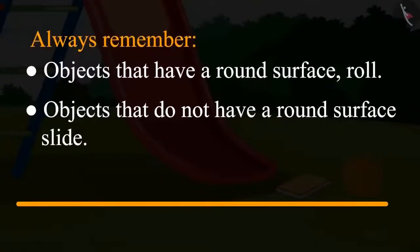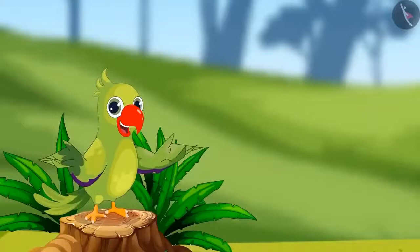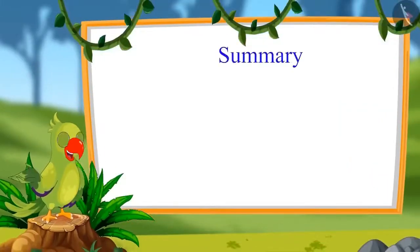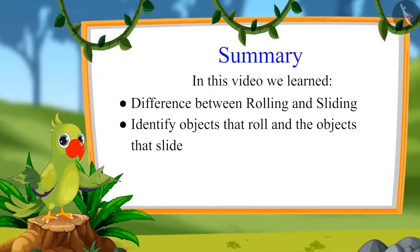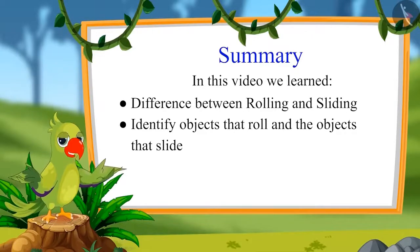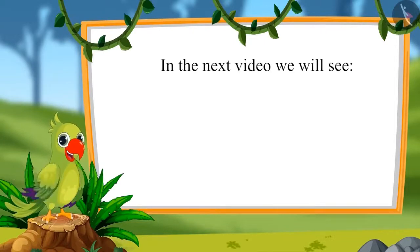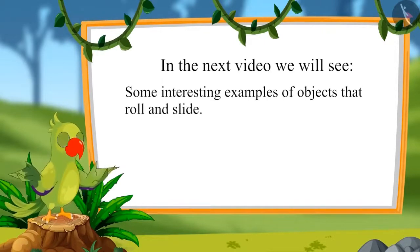So children, did you see that objects whose surface is round will roll, and objects whose surface is not round will slide down? That was all for today. In this video, we learned the difference between rolling and sliding, and identifying objects that roll and objects that slide. In the next video, we will see some interesting examples of objects that roll and slide. Till then, bye-bye children.